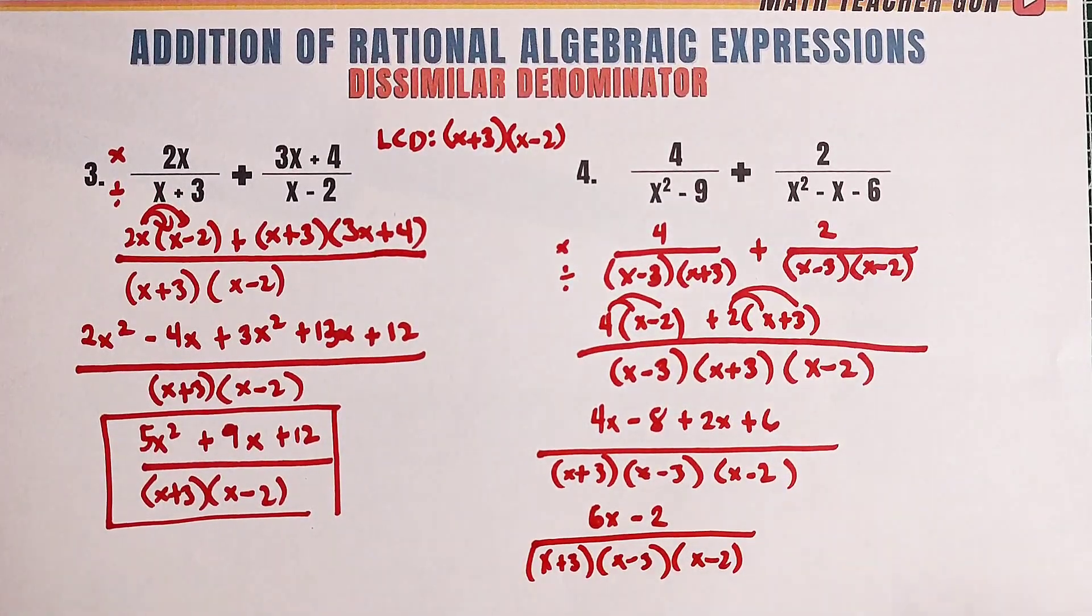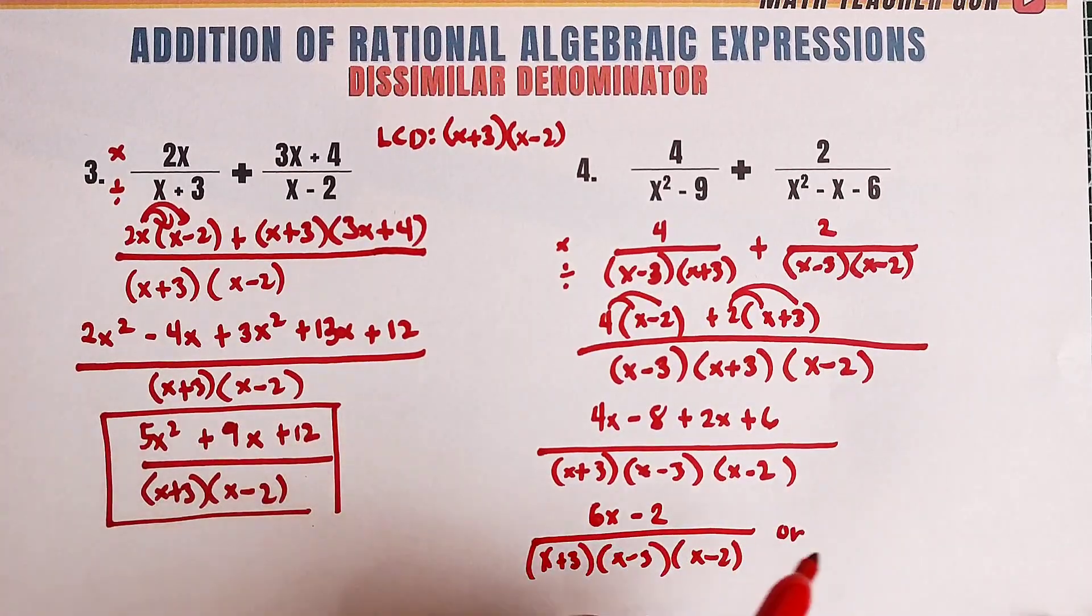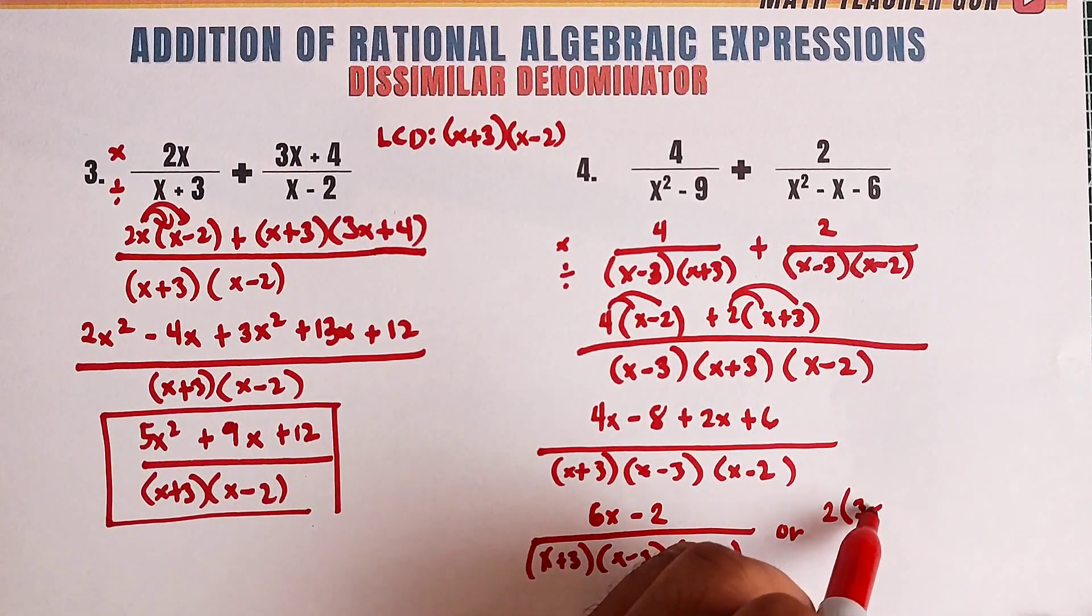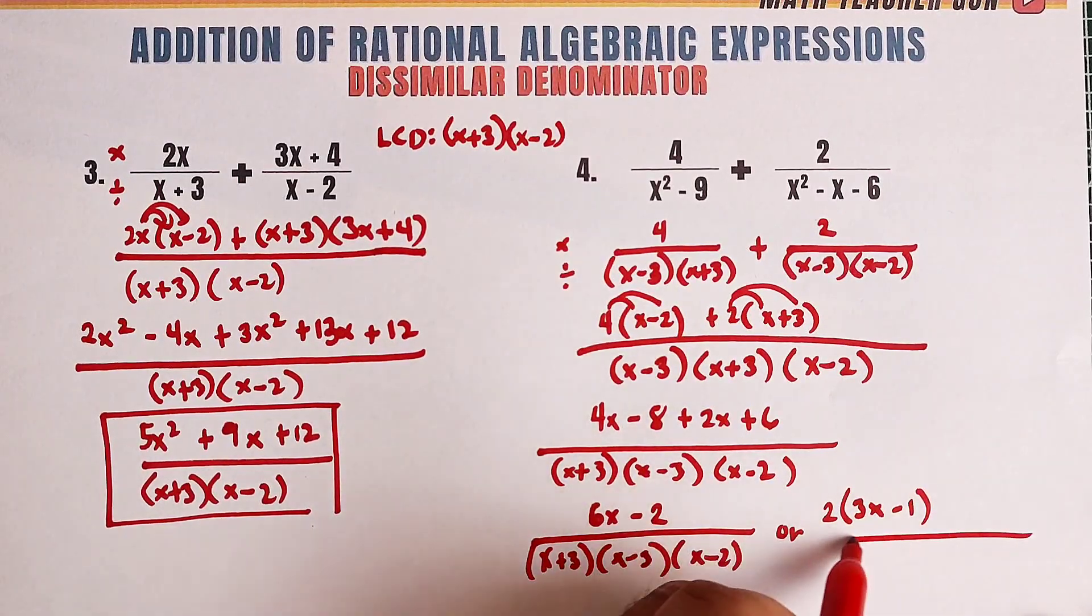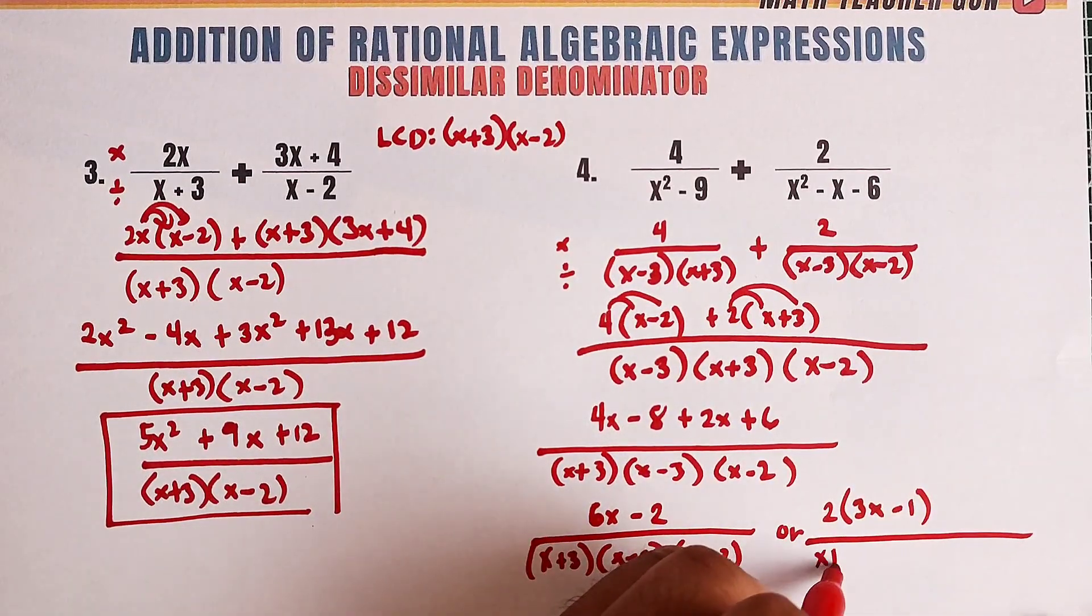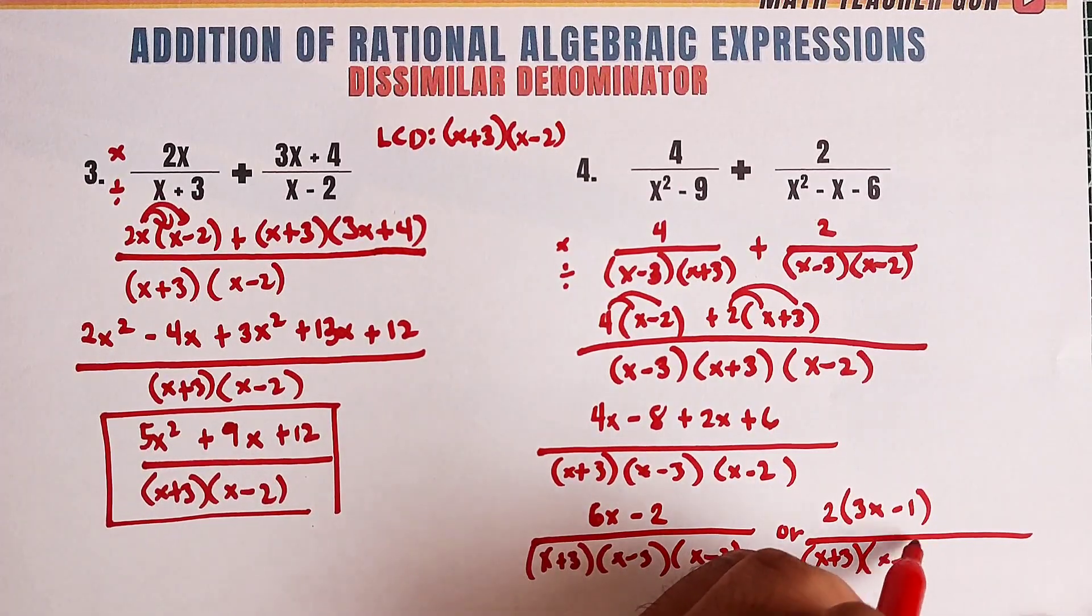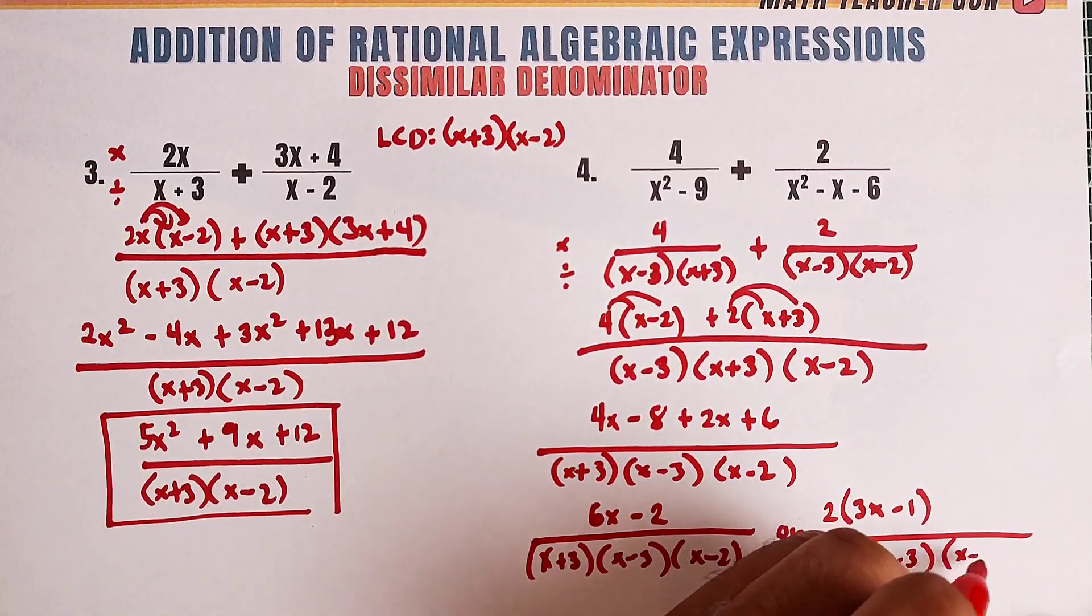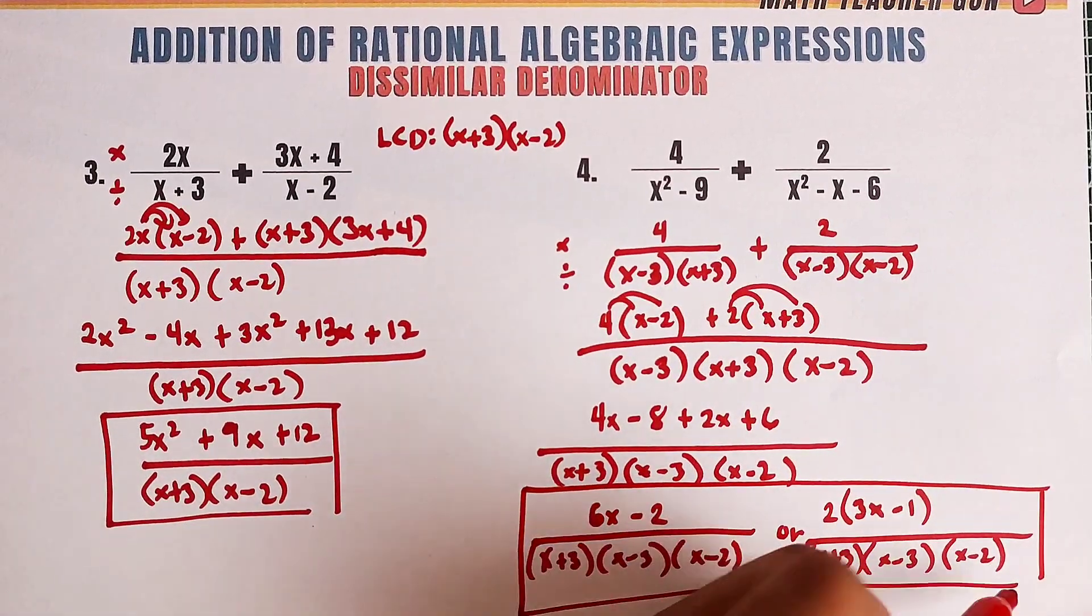Now, can we still simplify? Yes, we can factor this out if possible. This can become 2 times 3x minus 1. If you notice, we can't cancel anything out over x plus 3 then x minus 3 times x minus 2. And these are the possible values of x.